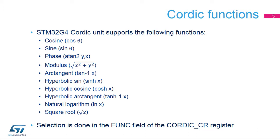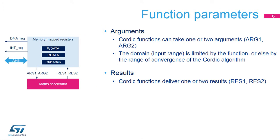This slide indicates the list of the 10 supported mathematical functions. The first step when using the coprocessor is to select the required function by programming the func field of the Cordic CSR register accordingly. Consequently, only one function is active at a time. Several functions take two input arguments, arg1 and arg2, and some generate two results simultaneously, res1 and res2. This is a side effect of the Cordic algorithm and means that only one operation is needed to obtain two values. For example, sine theta also generates cosine theta, while cosine theta also generates sine theta.